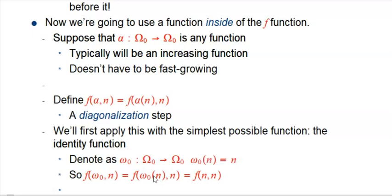Right now we're kind of overcomplicating things by giving that a fancy name. But it does turn out to be incredibly powerful, and there are good connections to other uses of omega-naught in ordinals. It's a new kind of gadget — a new control argument for our sequence of f functions that's not just an integer.